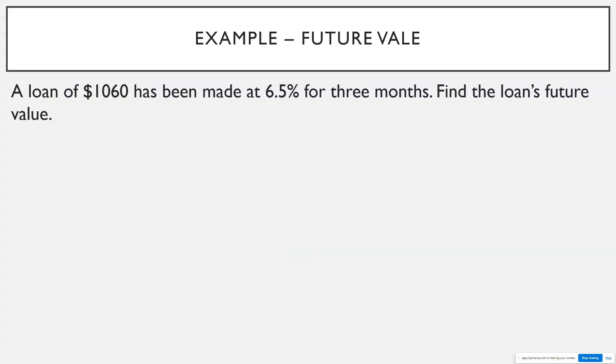Let's do one quick example of this. So a loan of $1,060 has been made at 6.5% for three months. Find the loan's future value. So what this basically means is it's asking how much do you pay back in total after three months? So I'm going to use this formula. The future value is equal to the initial deposit, or in this case, the initial amount we borrowed, times 1 plus the rate times time.